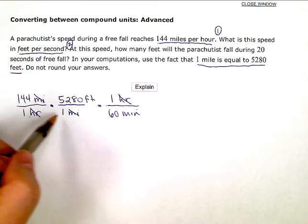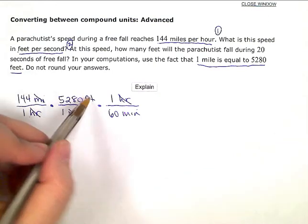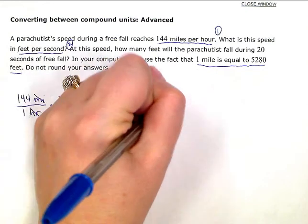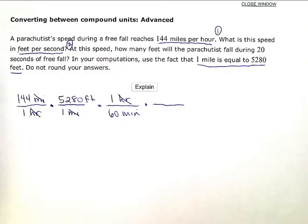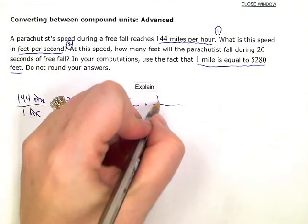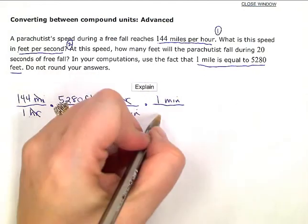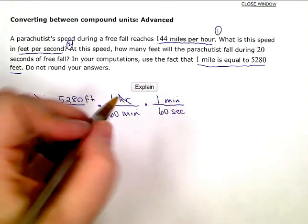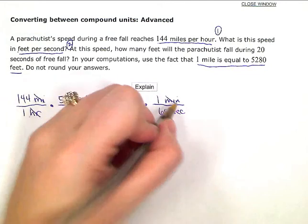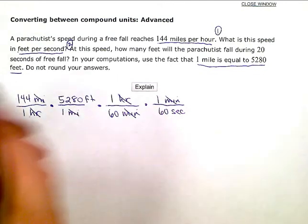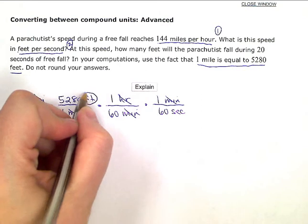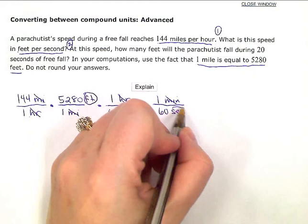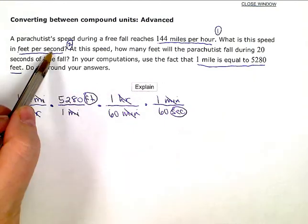Now the only units I have left are feet per minute. Not quite there yet. I need feet per second. So I'm going to put in one more ratio, changing minutes to seconds. Well, I know that one minute is equal to 60 seconds, and I'm putting the one minute on top so that it will eliminate or cancel with that one, leaving seconds. Now I have feet as my only unit left in the numerator and seconds as my only unit left in the denominator, feet per second.